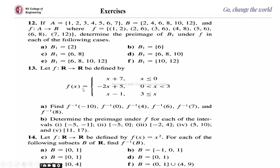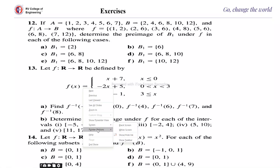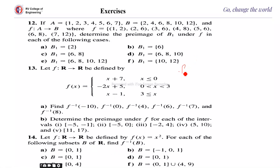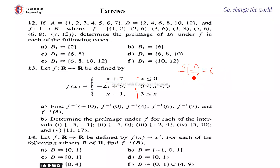To find function values, first check which range the x value falls in. For example, to find f(-1): since -1 ≤ 0, substitute in the first piece: f(-1) = -1 + 7 = 6. For f(0): 0 satisfies x ≤ 0, so f(0) = 0 + 7 = 7.